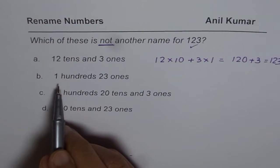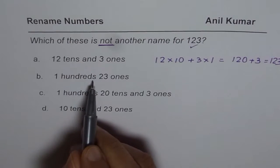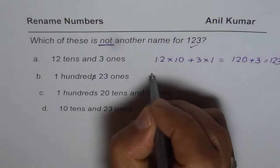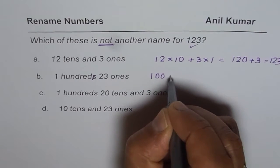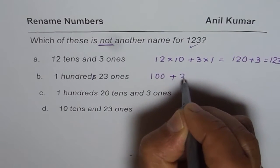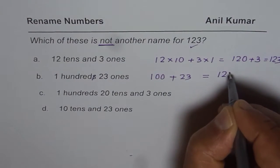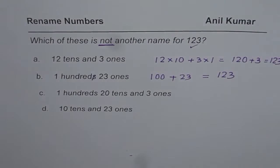The second one is 1 hundred and 23 ones. We could write 100, and 23 ones means 100 plus 23. That is also 123. So that is also correct.